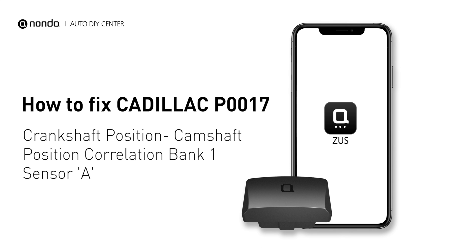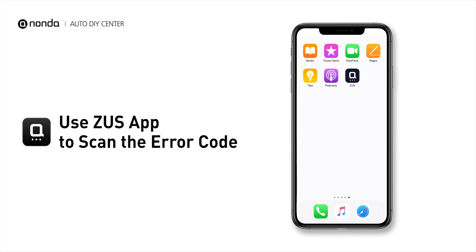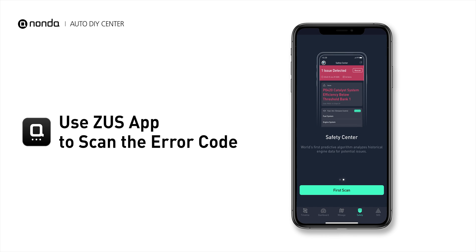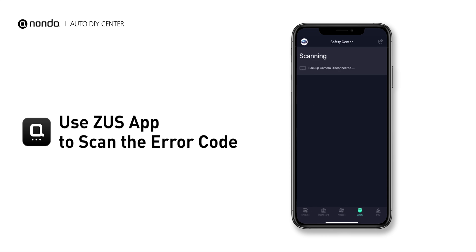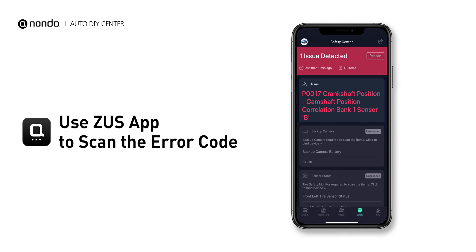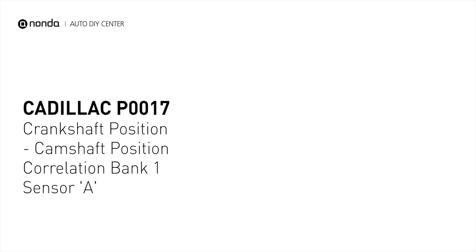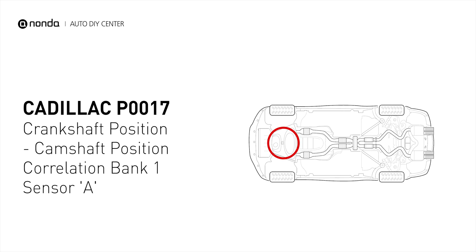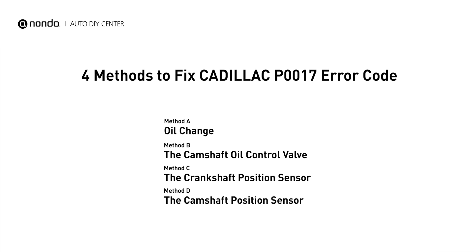This P0017 repair video is dedicated to Cadillac drivers. If your Cadillac is getting a P0017 error code, this video is going to show you four practical solutions to fix the error code at home. Use the Zeus app to scan your vehicle and see the error code P0017 — it indicates that the camshaft position sensor A for bank one does not correlate to the signal from the crankshaft position sensor.